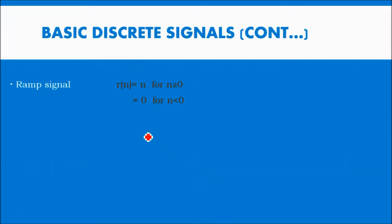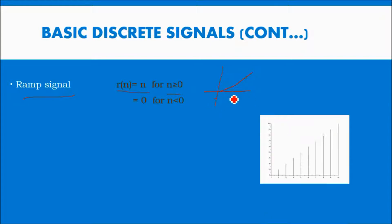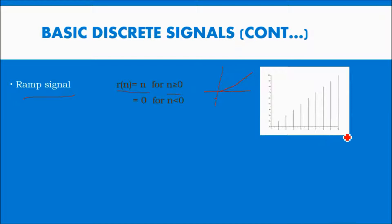The next discrete signal is the ramp signal. The value of the ramp signal is r of n equal to n, for n greater than or equal to 0. It increases linearly — for 1 it is 1, for 2 it is 2, for 3 it is 3, for 4 it is 4. So it is increasing in this direction as a ramp signal.